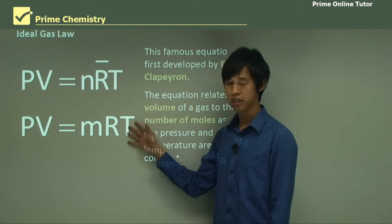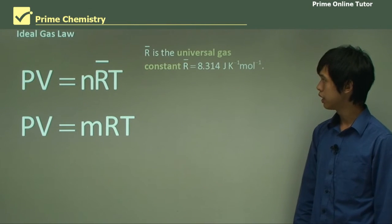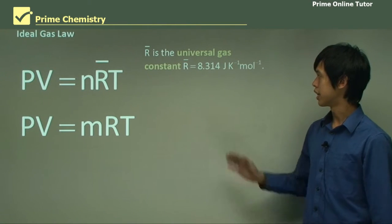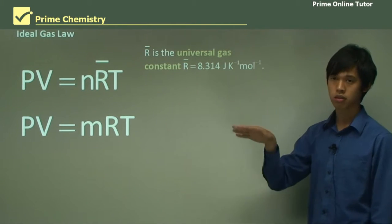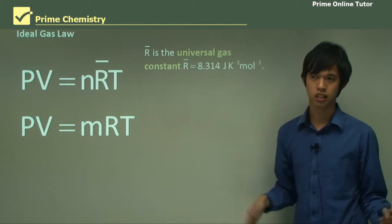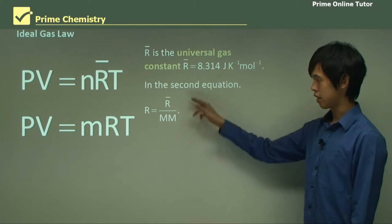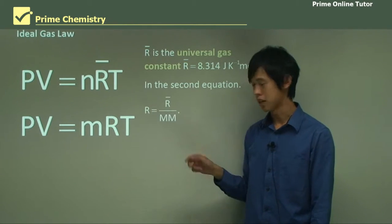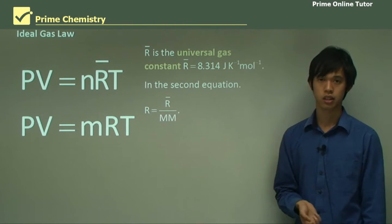An alternative representation is down here. So R bar, or R with the over bar, is called the universal gas constant. And it has value 8.314 joules per Kelvin per mole. So this is just a constant. Now in the second equation, this R, notice it doesn't have a bar like this one, is simply this R, the R bar, divided by the molar mass of the gas that you're studying.